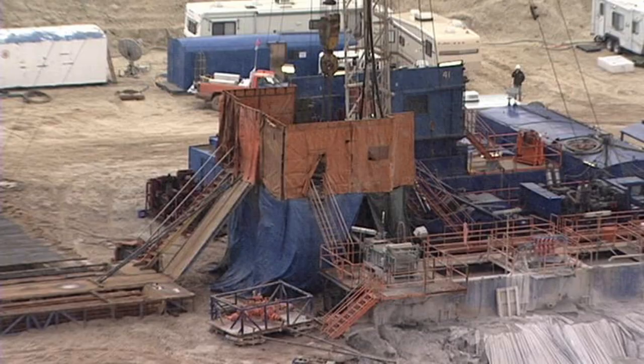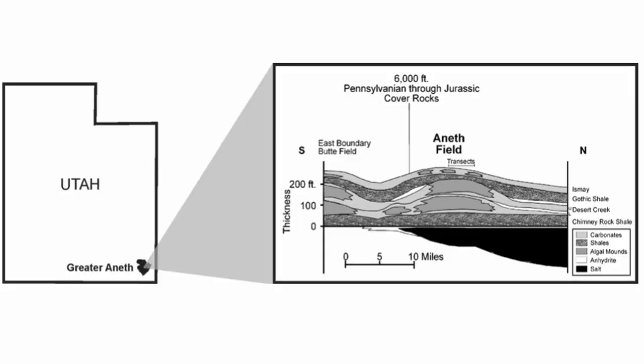Mud mounds can be reservoirs when there is a large volume of them and the porosity and permeability is good. Here's a photo from the Aneth Field in Utah — it is the largest oil producer in Utah, and it is actually an M-factory mud mound. The Aneth Field is topped by the Gothic Shale, which is the ultimate seal, and it contains dolomitized facies from mud mounds. The idea is that multiple cores coalesced to give you a large field. The scale here is 10 miles, so this is a significant field.